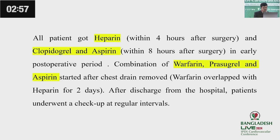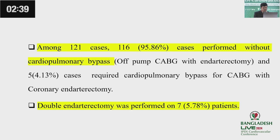Postoperatively, all patients received heparin within 4 hours after surgery, and clopidogrel and aspirin within 8 hours after surgery. A combination of warfarin, prasugrel, and aspirin was given after chest drain removal. After discharge, patients underwent checkups at regular intervals. Among 121 cases, 116 were performed without cardiopulmonary bypass, and 5 cases required cardiopulmonary bypass. Double endarterectomy was performed in 7 patients.